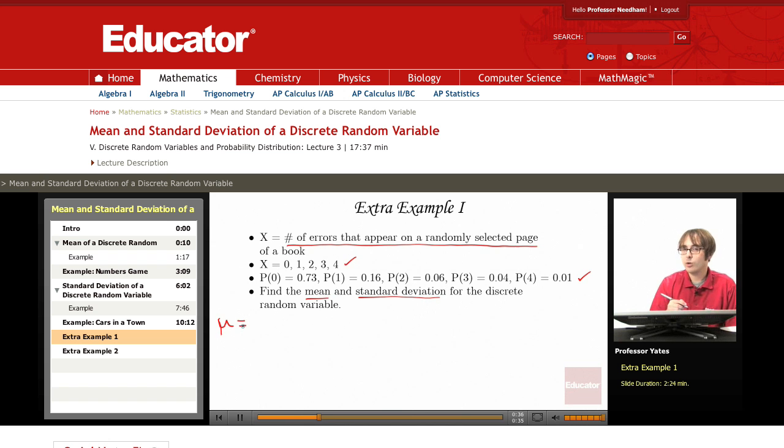So for the mean, what we're going to do is take each value of our x and multiply it by the probability. So we're taking 0 and multiplying it by 0.73, 1 and multiplying it by 0.16, 2 multiplying by 0.06, 3 multiplying by 0.04, and 4 multiplying by 0.01. So when all is said and done we should get 0.44 errors.